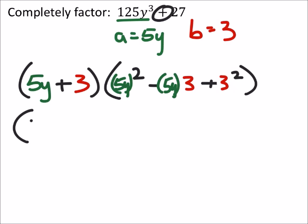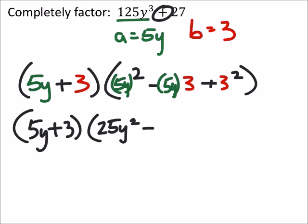And then we'll replace all the b's with 3. So, looks like we've got this 5y plus 3 in the front. And then 5y squared is going to be 25y². Minus 5y times 3 is 15y. Plus 3 squared is 9.